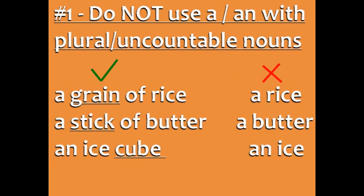Rice, butter, and ice are also uncountable, so you can't use the word 'a.' But you can say 'a grain of rice,' 'a stick of butter,' and 'an ice cube.'